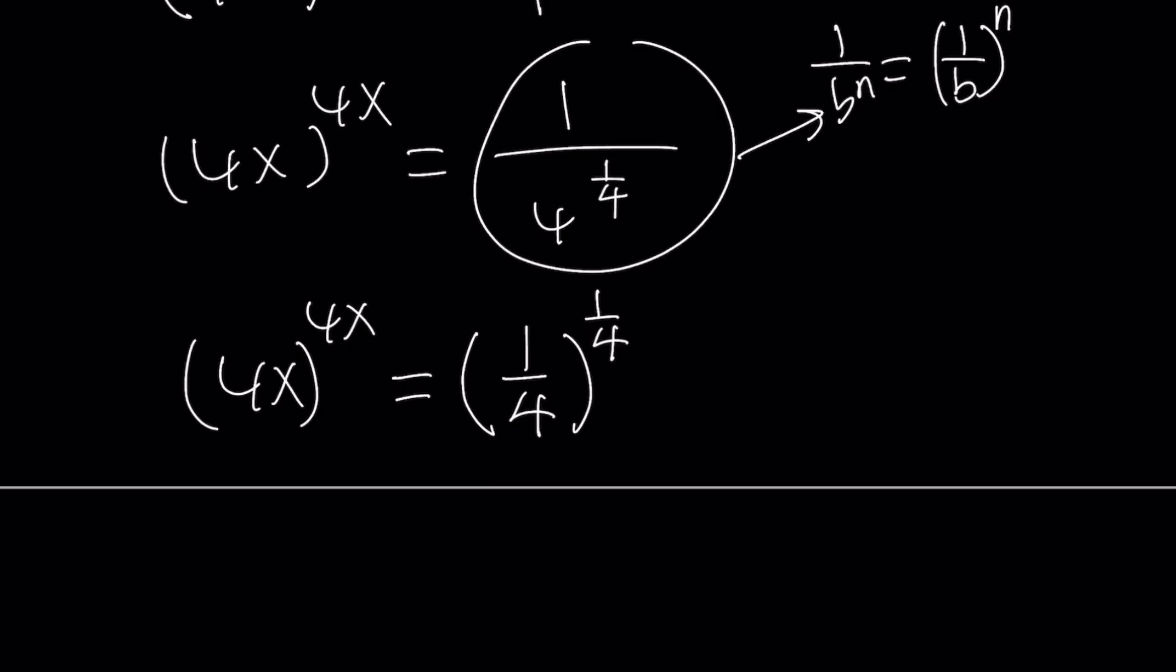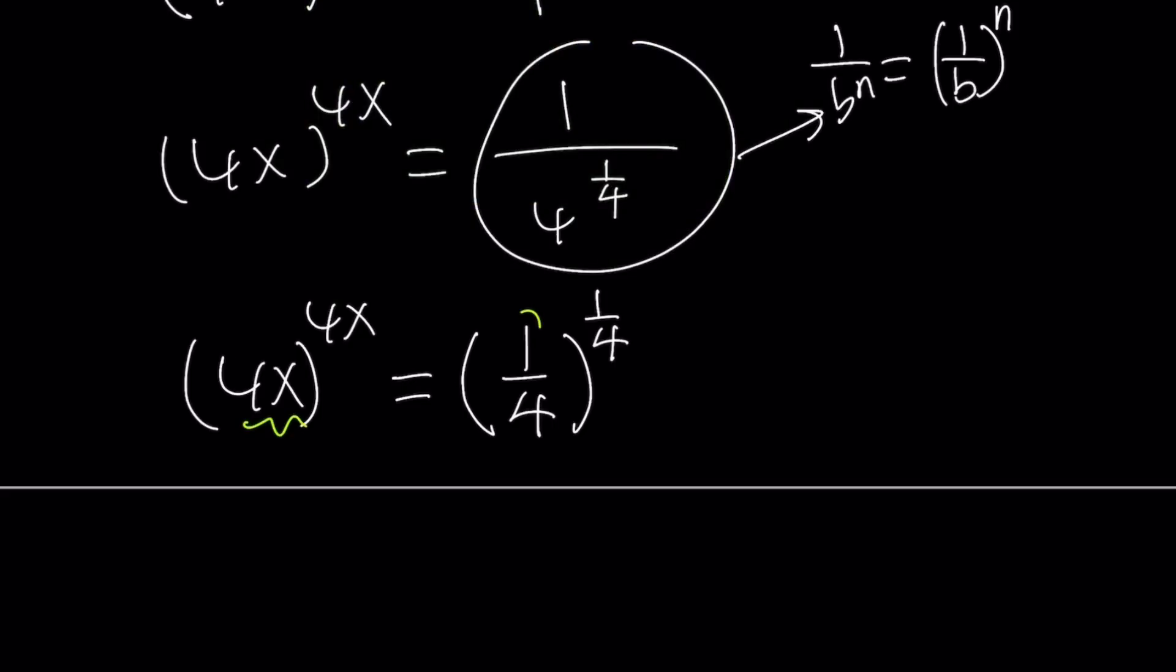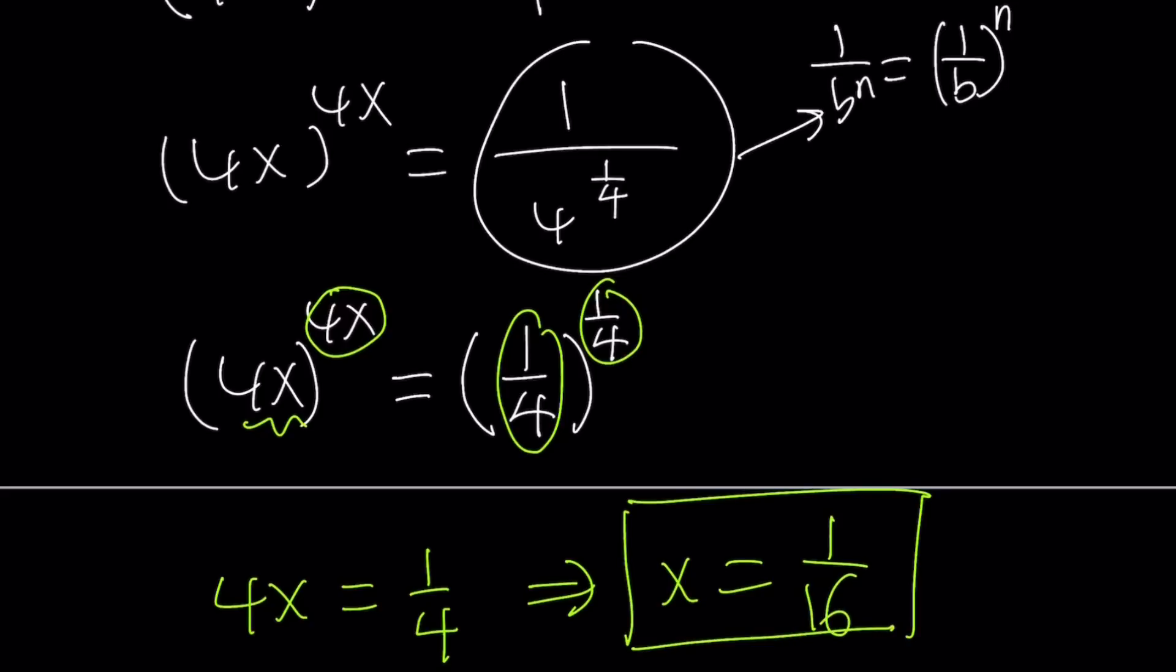Now we got the one-to-one correspondence. What is it? 4x is 1 over 4, and 4x is 1 over 4. Isn't that great? Yes. And now we got 4x equals 1 over 4, and then x equals 1 over 16, and case closed.